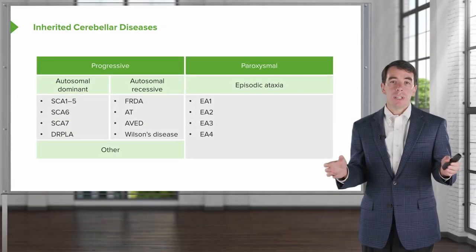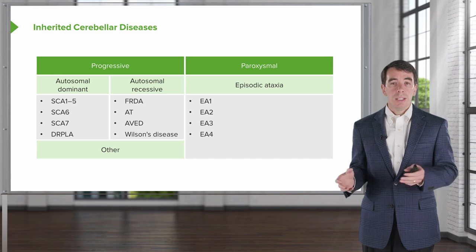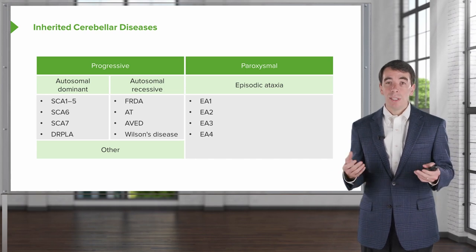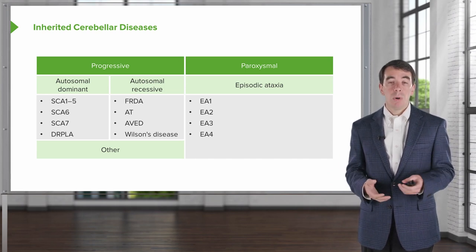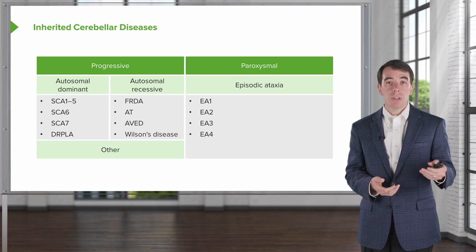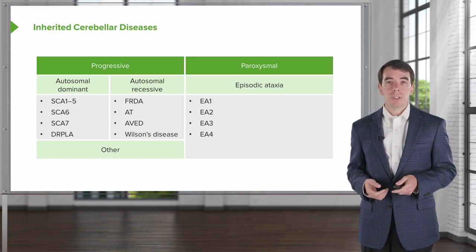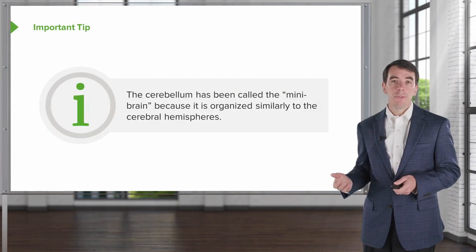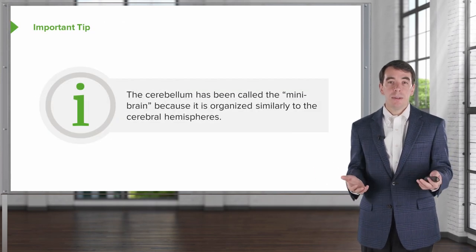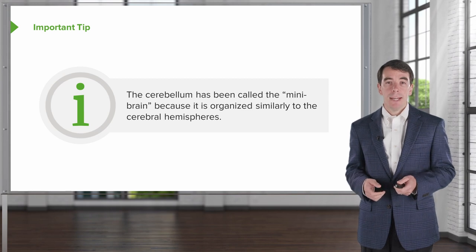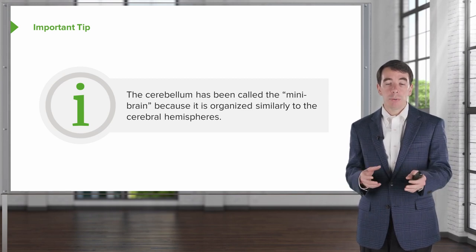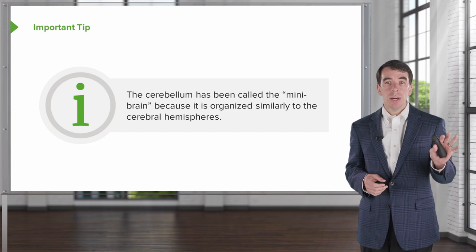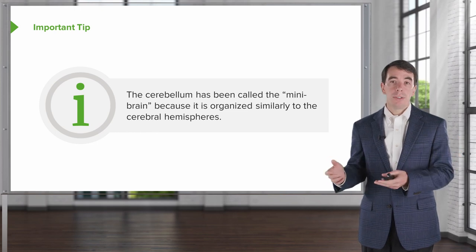Now let's talk about what the cerebellum is, how it works, and the most common diseases to think about when there's a problem with the cerebellum or with disequilibrium. An important starting tip: the cerebellum has been called the mini-brain and is organized very similarly to the brain. We can use our understanding of how the brain is structured to understand how the cerebellum is structured and organized.